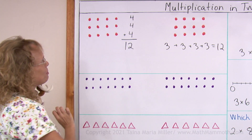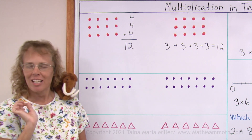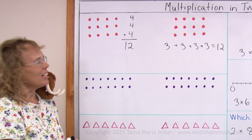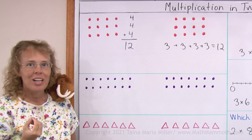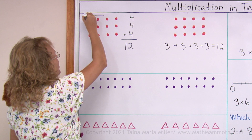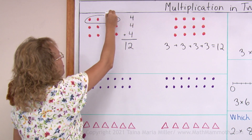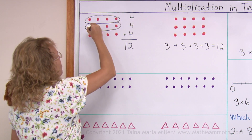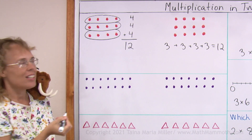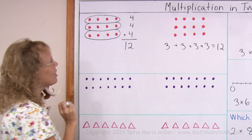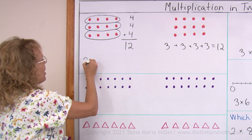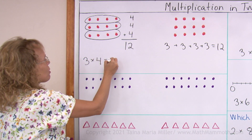Here I have some raspberries that are neatly arranged in rows and columns. I can make groups this way — I can think of it as having a group of four, a group of four, and a group of four. I can add four and four and four. I can write a multiplication: three groups of four equals twelve.